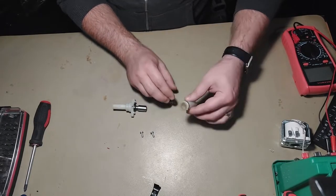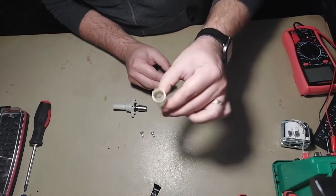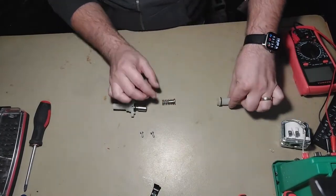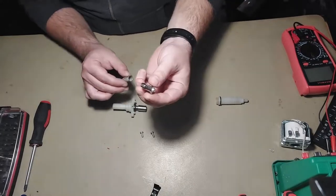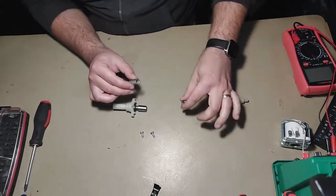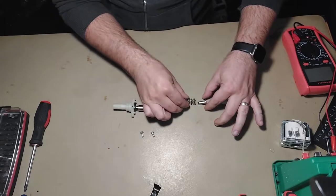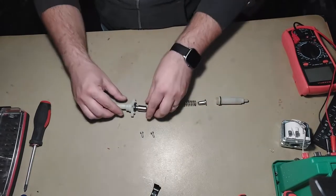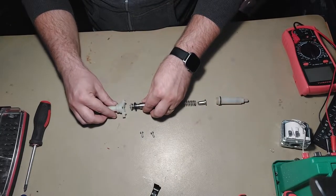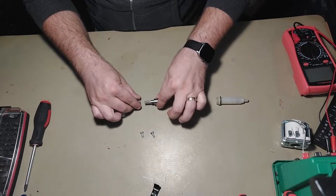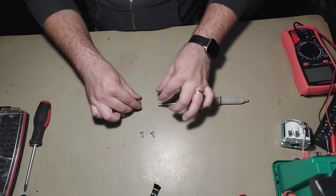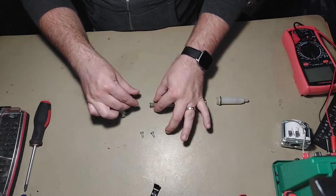So as you can see here, we have the first part which is the casing like a syringe, then we have this piston here, one big spring, then another piston like this, another big spring.